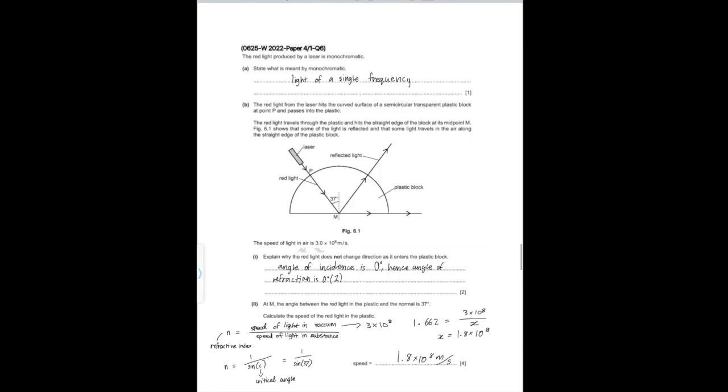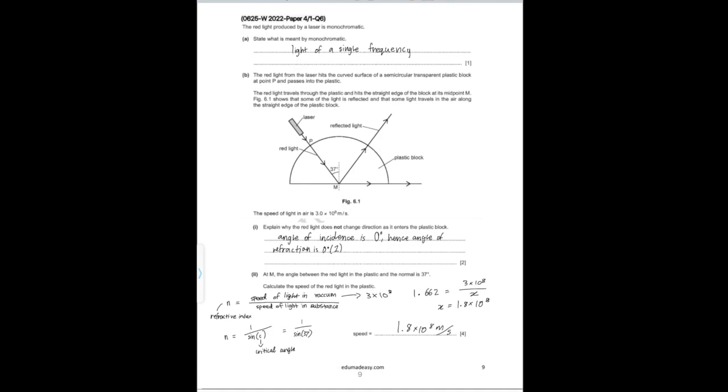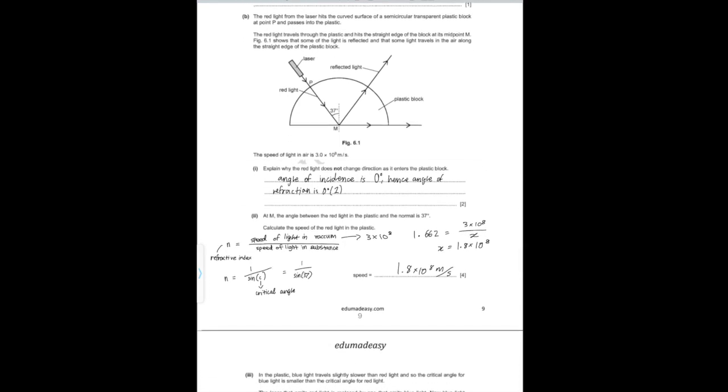For the next question: Part A says state what is meant by monochromatic — that is, light of a single frequency. Part B says red light from a laser hits the curved surface of a semicircular transparent plastic block at point P and passes into the plastic, then hits the straight edge at midpoint M. Part I asks why the red light does not change direction as it enters the block. Any ray entering the curved surface is always perpendicular to the tangent, meaning it's always along the normal, so the angle of refraction is always zero, and it continues in a straight path into the block.